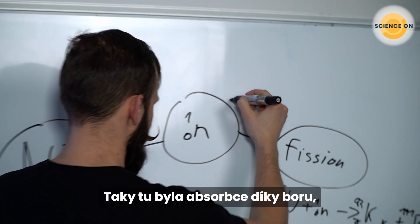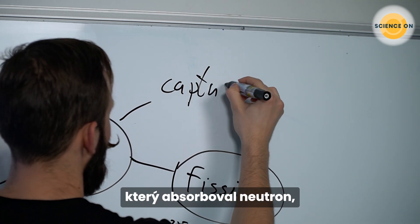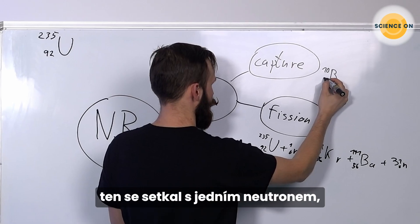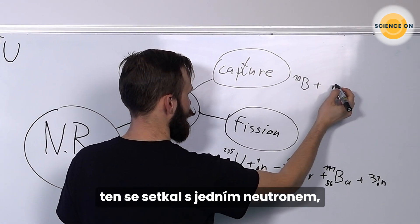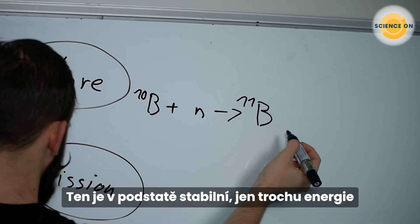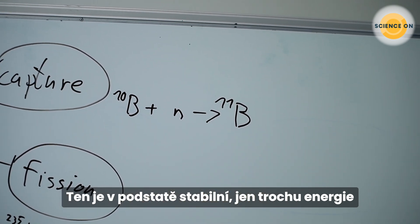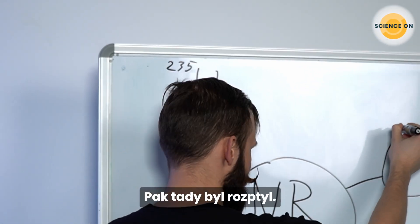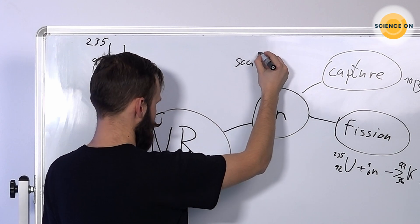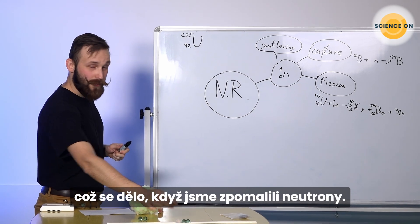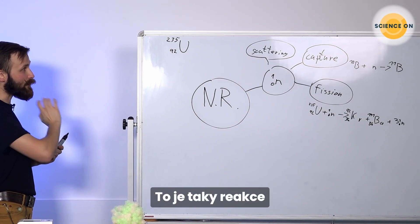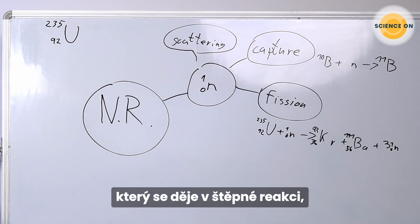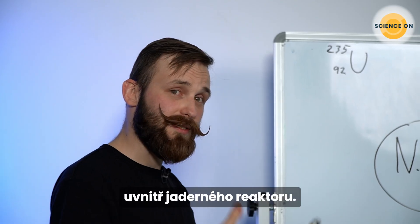We also have the boron capture reaction, which means there was boron with 10 protons and neutrons. We hit it with a neutron and it leads us to boron-11, which is also stable. Some remaining energy vanishes with gamma rays. There was also the scattering — the nucleus scattering reaction — which occurred when we slowed down our neutrons. So these reactions are the basic principles of nuclear reactions inside the nuclear power plant, inside the nuclear reactor.